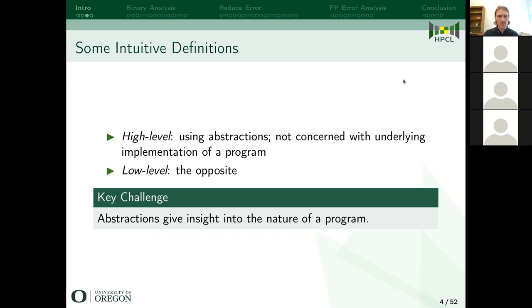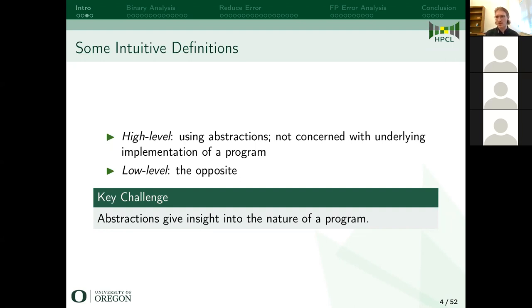What I mean by high level and low level is an intuitive definition — there's not really a formal definition. High level means you're using abstractions, or you're not concerned with the underlying details of how a program is implemented — things like how the bytes are arranged or what precise floating point representation you're using to represent a real number. Low level would be the opposite: you do care about these things. A key challenge of verification of low-level programs is that abstractions programmers use give insight into the nature of a program.